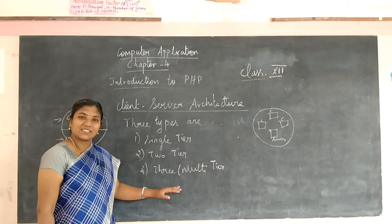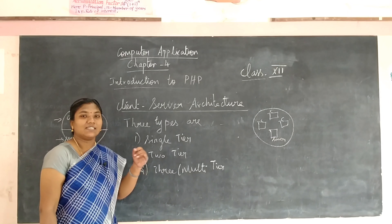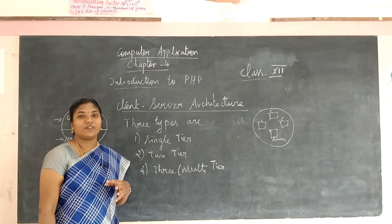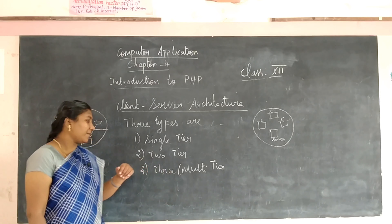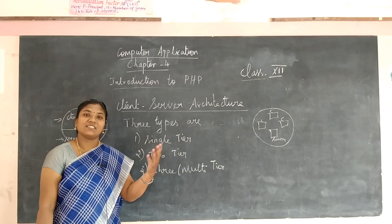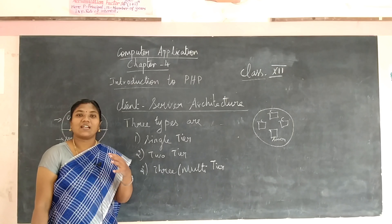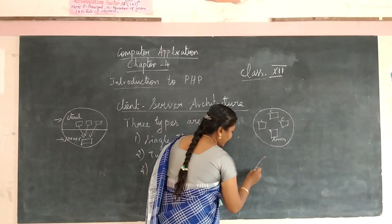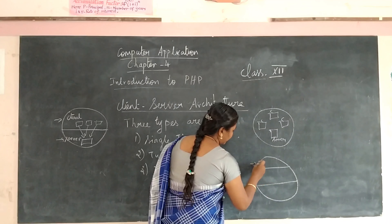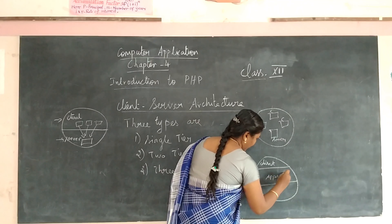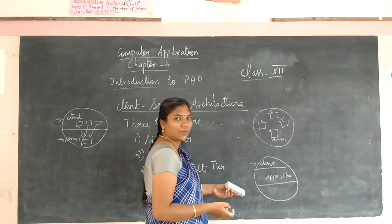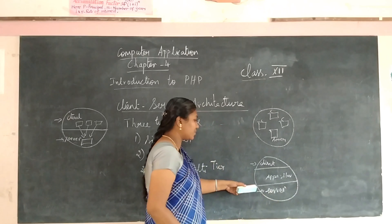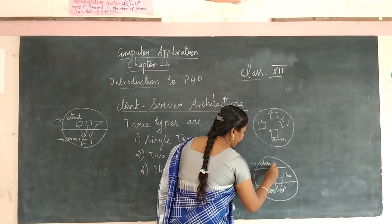In three-tier or multi-tier architecture, the server is used by the client but here the client decides whether there may be three, four, or five levels, depending on the software they are using and their program requirements. There are three layers: the first is the client, the second is the application software following business logic, and the last one is the server. Data moves from server to application software and then from application software to the client.